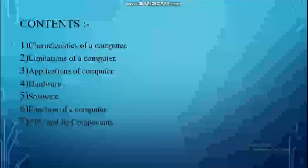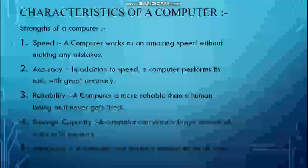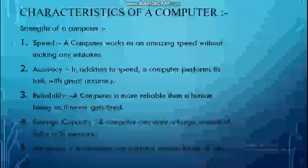Let me discuss the characteristics of a computer, starting with its strengths. The first strength is speed. A computer works at an amazing speed without making any mistake. A normal person would complete a task in a few hours, whereas the same task is finished by a computer within a fraction of a second. Calculations can be done in milliseconds or nanoseconds. Due to this speed, a computer can deal with multiple processes at the same time — that is why we say our computer is multitasking and also multiprocessing.